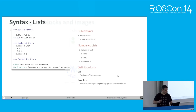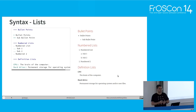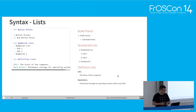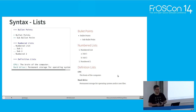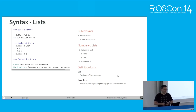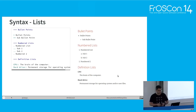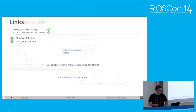Each element or figure in AsciiDoctor can have a special heading — like included source code or an image can have a caption beneath the picture, which you can have on an index page, making it easier to read. Bullet points, numbered lists, and definition lists are all available. The syntax is quite easy: a star is a bullet point, a dot is numbered, and two semicolons give you a description or definition list — I use that quite often in documentation.